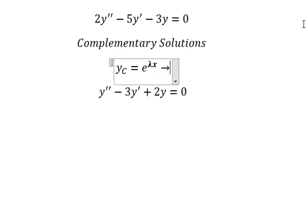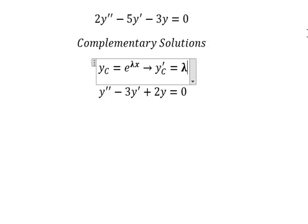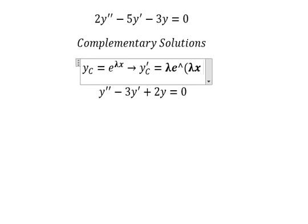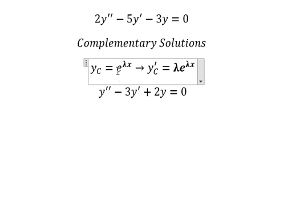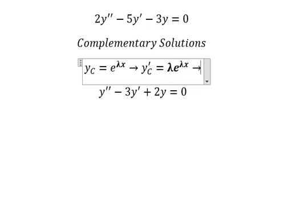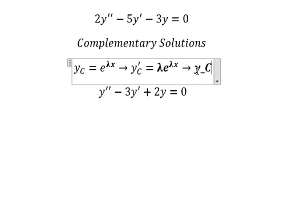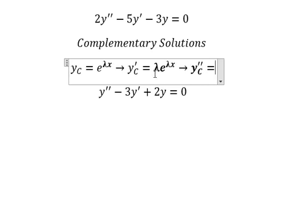First we take the derivative of yc and we get lambda times e to the power of lambda x. Because when we differentiate e to the power of lambda x, we keep the same e to the power of lambda x and bring down lambda. Then we take the second derivative of yc and we have the result like this.